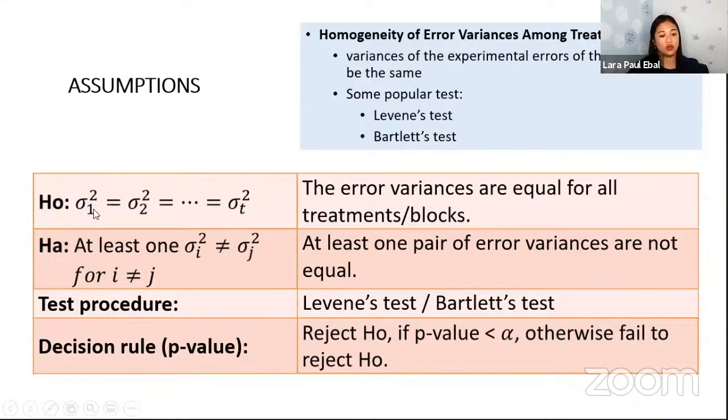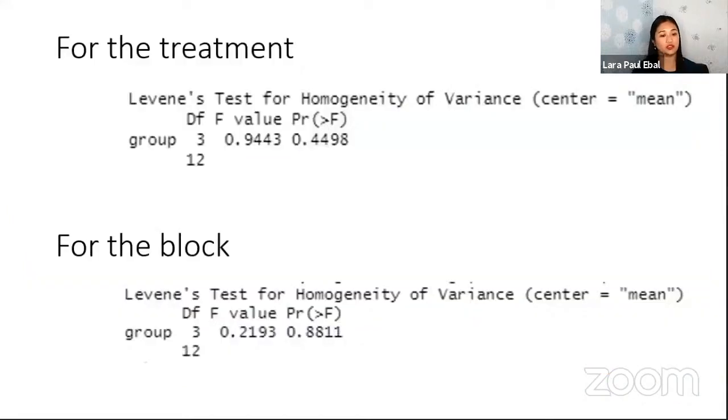Then another is to test again for homogeneity of error variances. You're already familiar with this. The same H0: sigma 1 square equal to sigma 2 square, and so on. The error variances are equal. That's your H0. HA: at least one pair of error variances are not equal. Then the test procedure, the same, Levene's or Bartlett's. The decision rule: we reject H0 if the p-value is less than alpha, otherwise fail to reject H0. So this is an example. We have this Levene's test result, the p-value that's greater than alpha for the treatment and even for the block, 0.88. It's still greater than alpha. So therefore, we have satisfied the assumption of homogeneity of error variances.